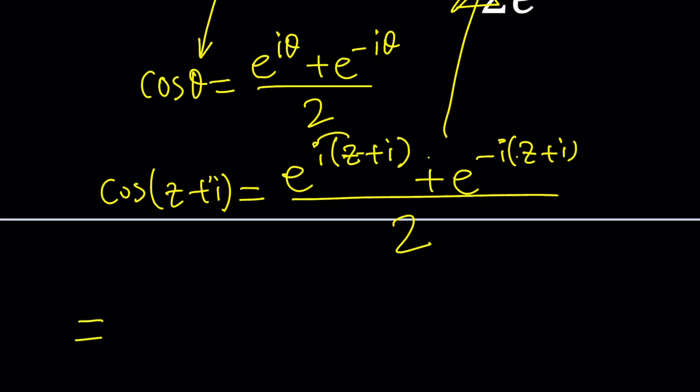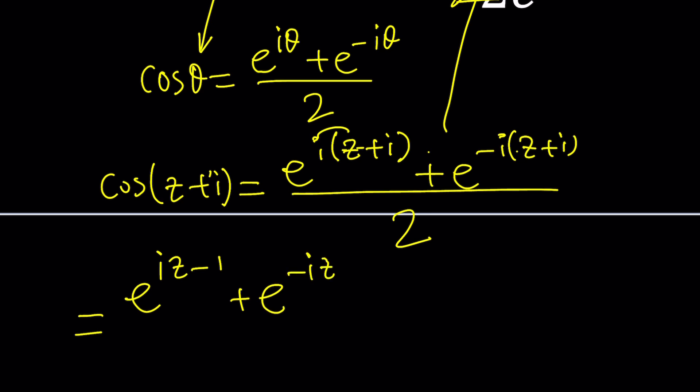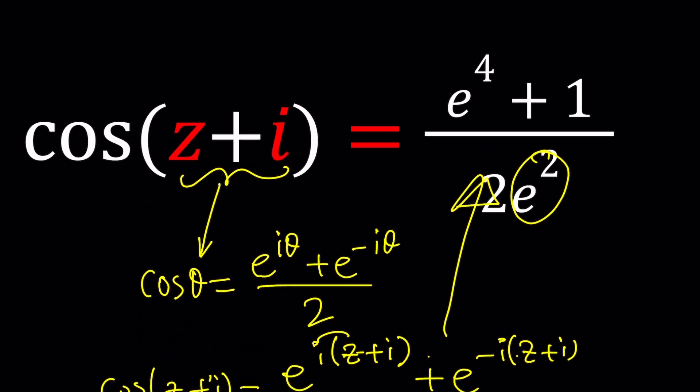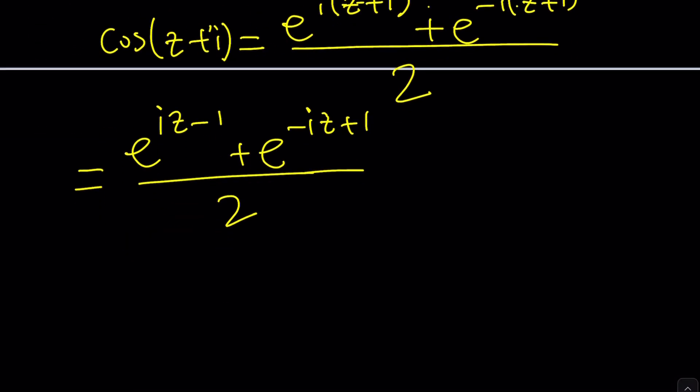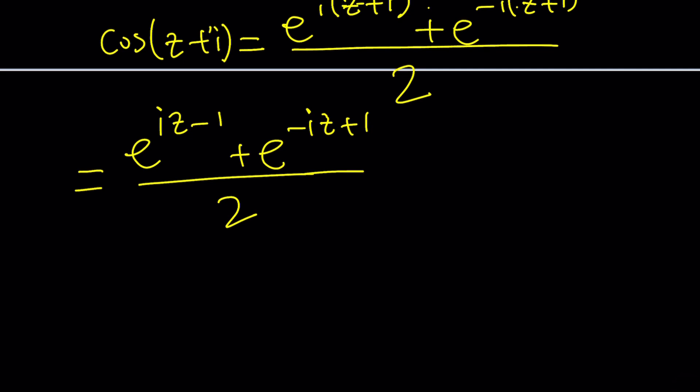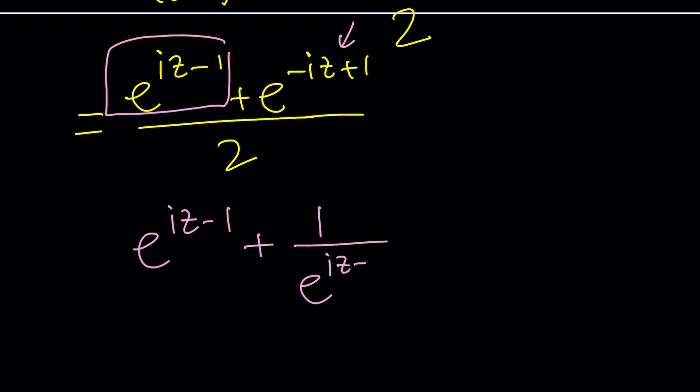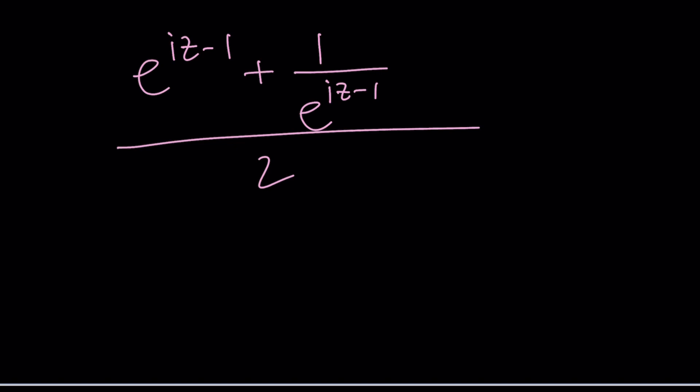First of all, I can distribute the i. That's going to give me e to the i z plus i squared, which can be written as minus one. And the second part is e to the power negative i z, that's going to be the opposite, so it's going to be a plus one divided by two. Now, in order to get an e at the bottom, I can multiply the top and the bottom by e to the power negative two. Let's go ahead and stick to this expression. I'm going to write it as e to the power i z minus one plus one over e to the power i z minus one. Notice that the exponent will be negated. Divide by two.